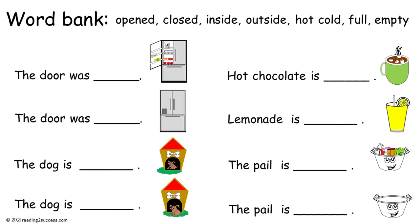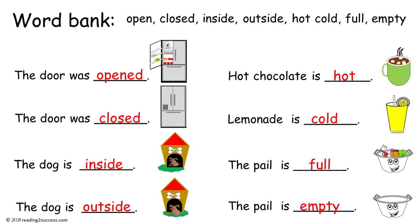Now have kids look at the word bank and with them read their choices: opened, closed, inside, outside, hot, cold, full, and empty. Have them complete each sentence with the correct word in the word bank. The answers are: the door was open, the door was closed, the dog is inside, the dog is outside. And in the next column: hot chocolate is hot, lemonade is cold, the pail is full, the pail is empty.